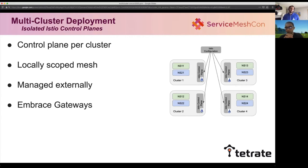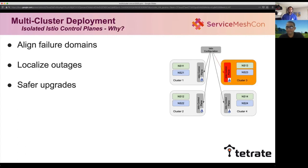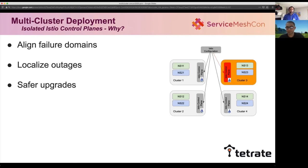We came up with a more simplistic approach: deploying Istio essentially isolated per cluster. We deploy the control plane on every cluster and scope it to only know about services within its own cluster — a locally scoped mesh. We manage these control planes externally using CI tools and GitHub. The key benefit: failure domains are aligned to the cluster. If you push bad config or upgrade Istio incorrectly and it causes an outage, it is localized to that cluster. This also allows safer upgrades — you can pick a cluster with less usage, update it, and if successful, roll out to other clusters. This differs from the shared control plane recommendation.